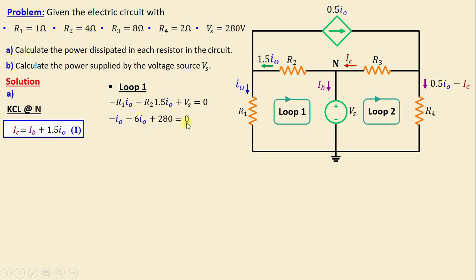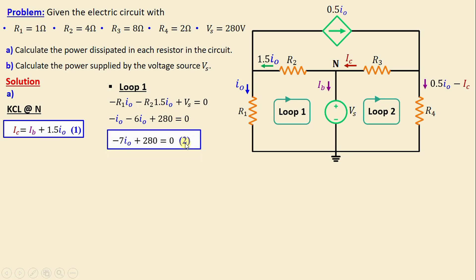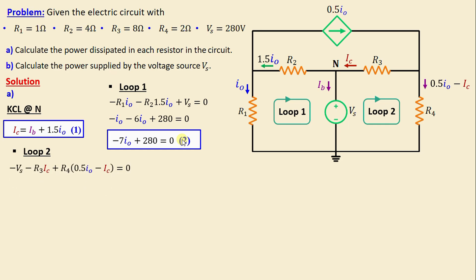Continuing to simplify, we obtain: −7·IO + 280 = 0. I will call this Equation 2. Let's move on now to Loop 2 by applying Kirchhoff's voltage law.